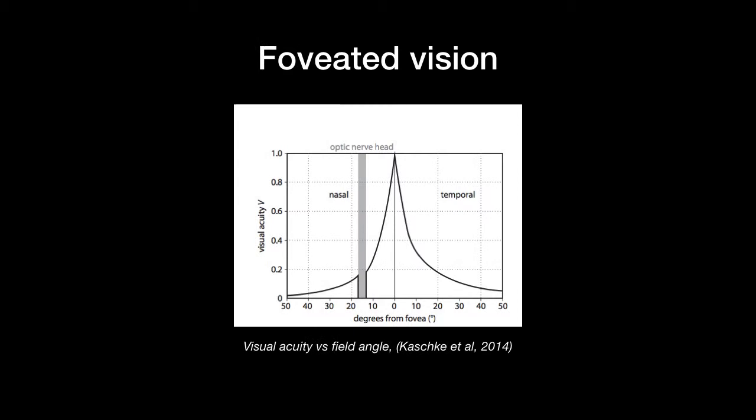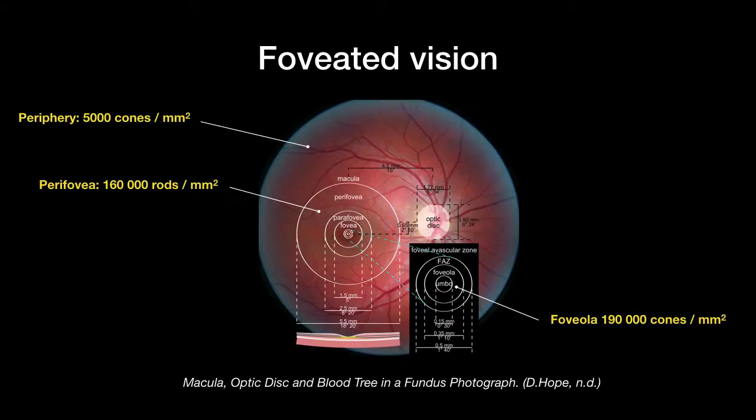Unlike cameras, our eyes do not sample the world uniformly. A high-resolution central area called the fovea is supplemented by a low-resolution peripheral field. This is formed by an uneven distribution of sensors across the retina.